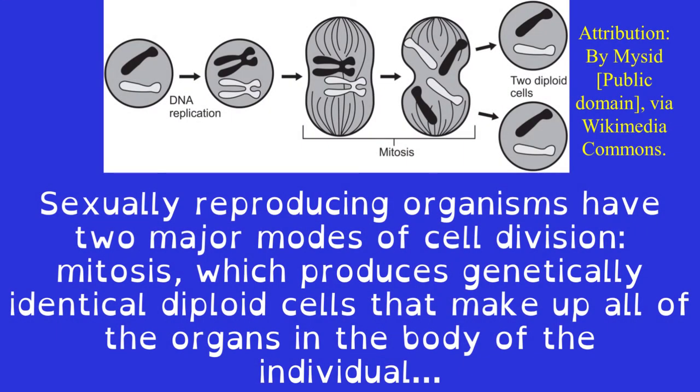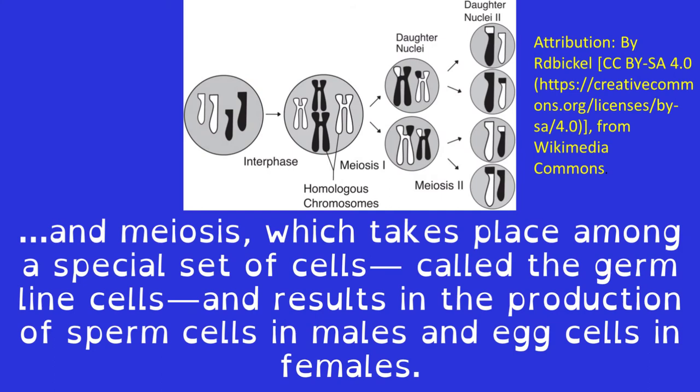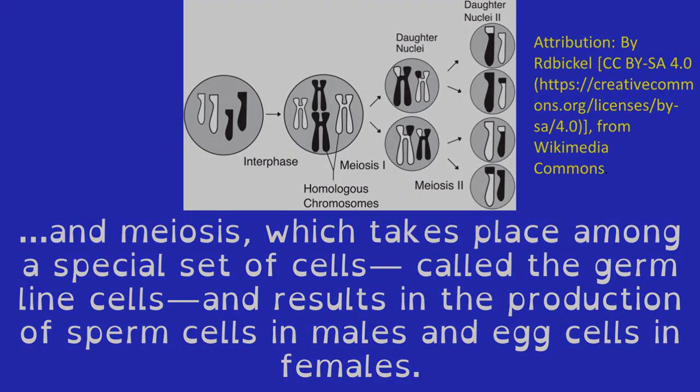Sexually reproducing organisms have two major modes of cell division: mitosis, which produces genetically identical diploid cells that make up all of the organs in the body of the individual, and meiosis, which takes place among a special set of cells called the germline cells, and results in the production of sperm cells in males and egg cells in females.